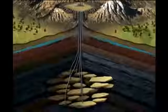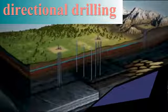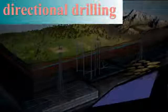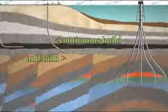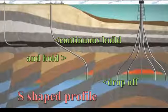Let's look at how directional drilling is done. As this illustration shows, directional drilling typically follows different configurations. It starts with a continuous build, holds, then drops off to form an S-shaped profile.